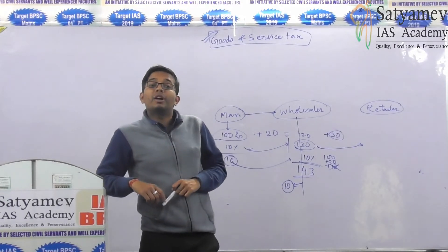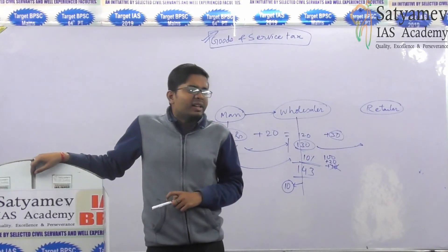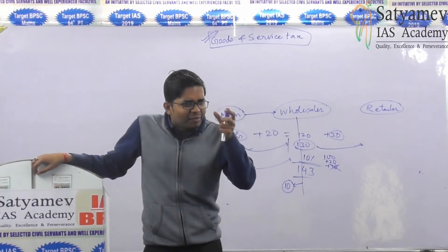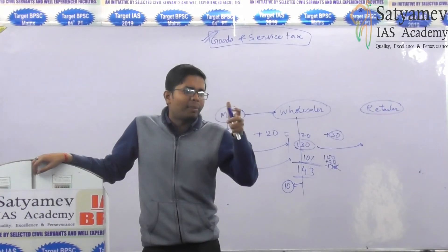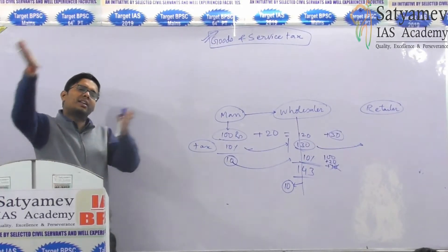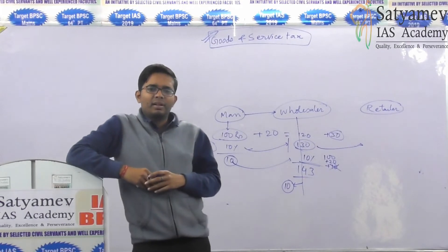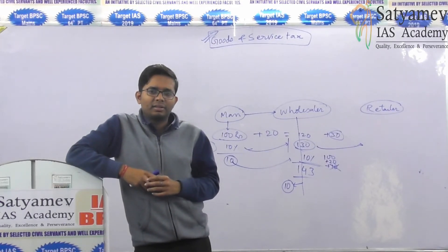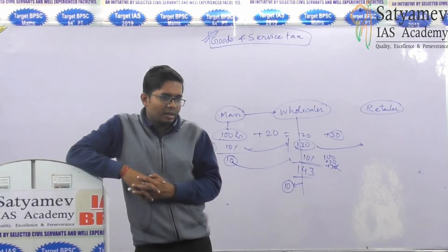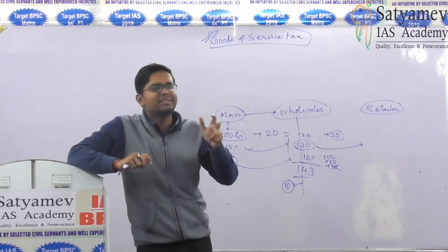There is the phenomenon of interstate trade. In interstate trade, the cascading effect was still there because the tax levy was not at a uniform rate. In one state it is 8%, in another state the VAT is 9%. So the cascading effect — tax on tax — still remained in interstate trade.